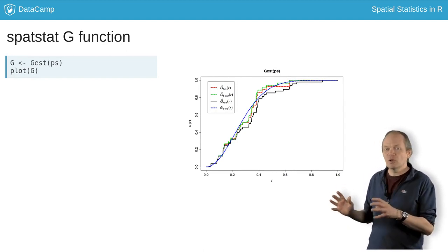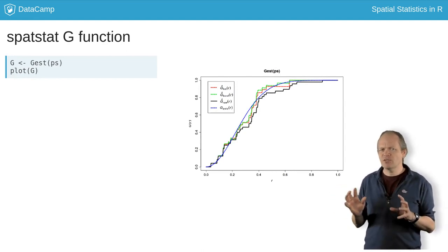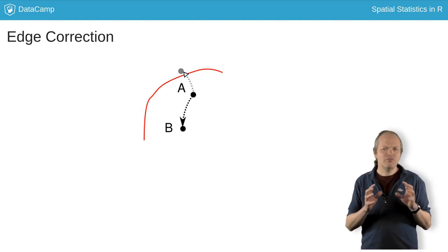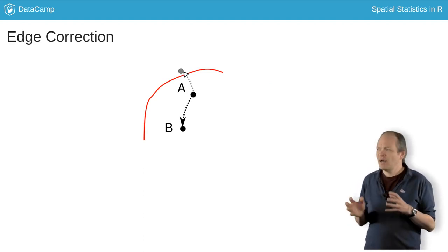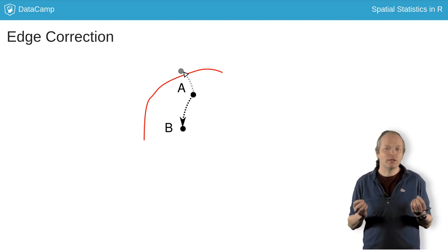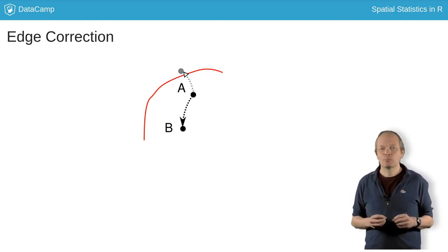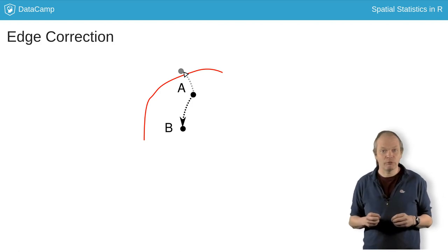The lines in this plot include two corrections for edge effects, because events near the edge of the window have less area in which the nearest neighbor might have been, and this will bias the estimator. So G est has a correction argument to choose these edge correction algorithms.